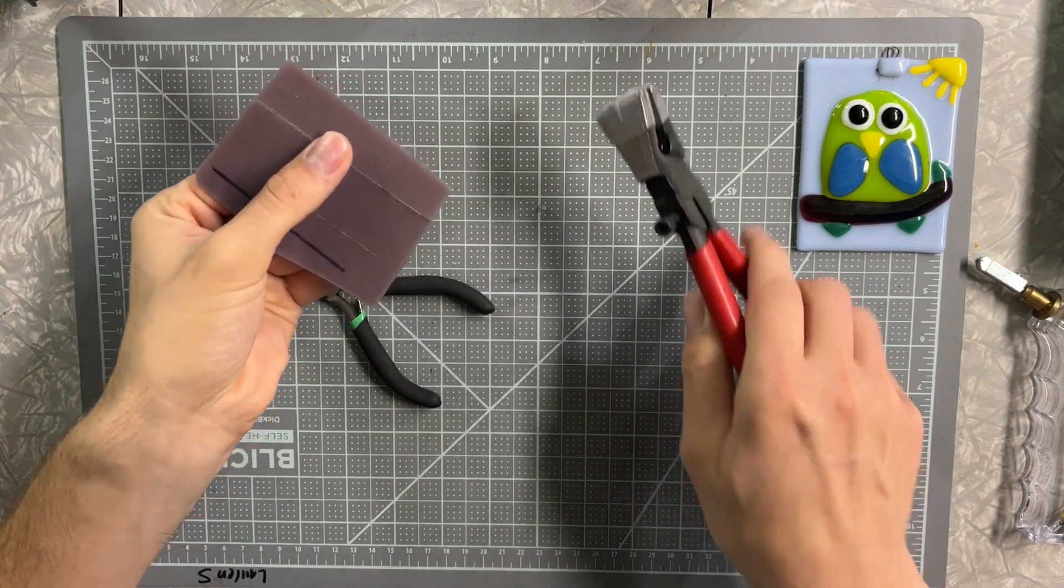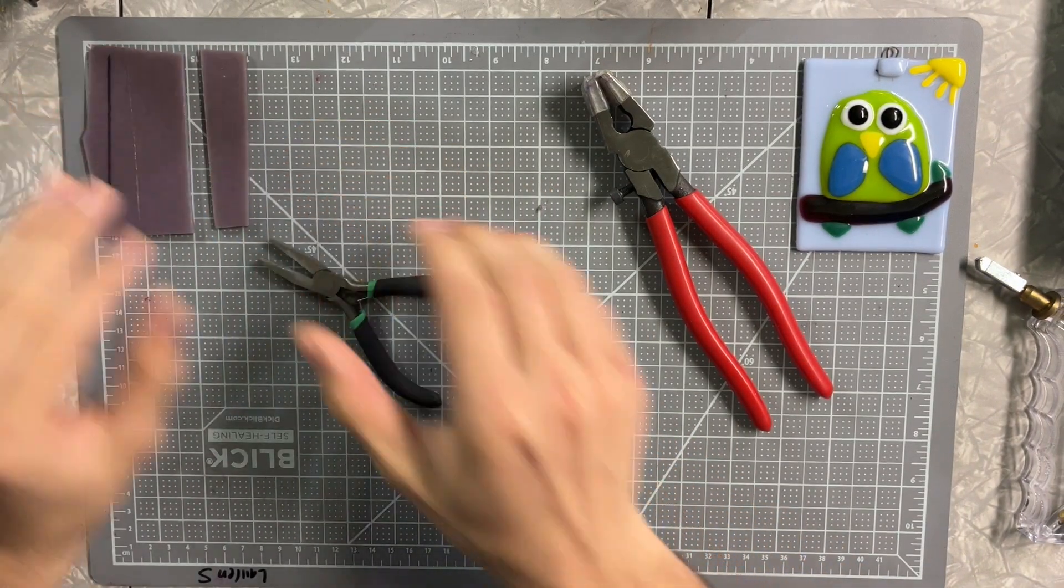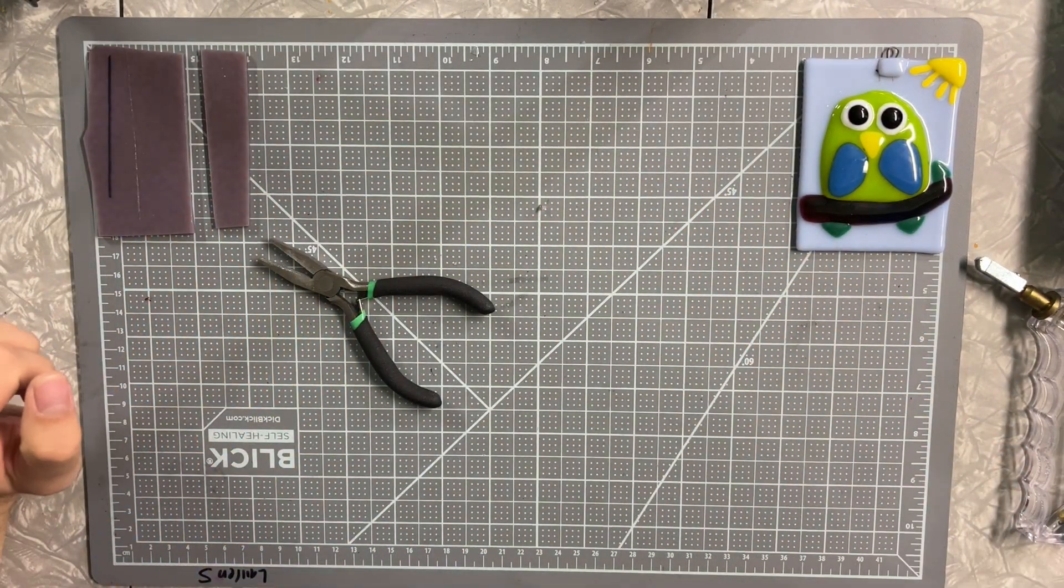You don't need much squeeze at all, and you can see it went ahead and broke right in half there.